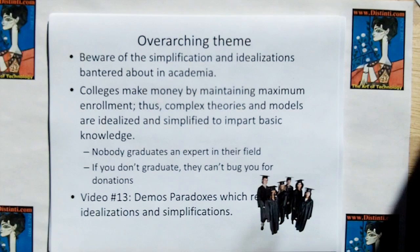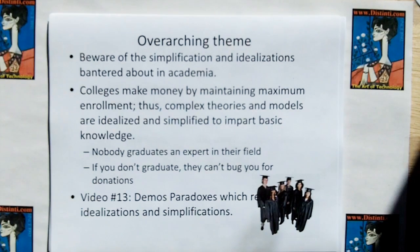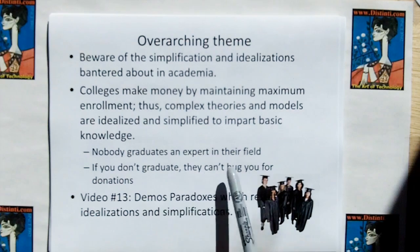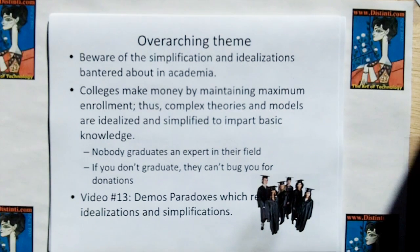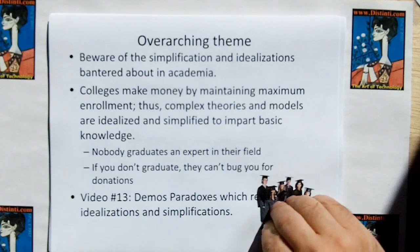The overarching theme of this video is to be aware of the idealizations and simplifications bantered about in academia. Colleges make money by maintaining maximum enrollment. Complex theories and models are idealized and simplified to maintain the maximum number of people to pass the given test and move on to the next level — because if you don't graduate, they can't bug you for donations. Because of this idealization and simplification, nobody graduates as an expert in their field, even with straight A's. In video number 13, I demonstrate a paradox which results from these idealizations and simplifications.